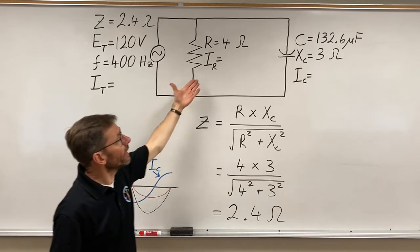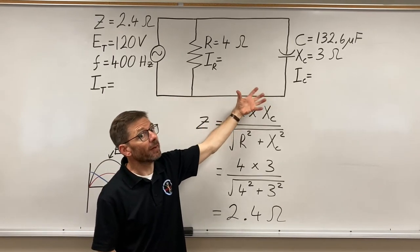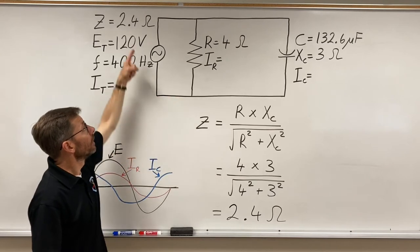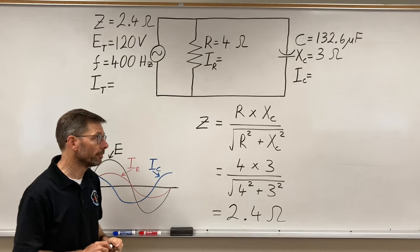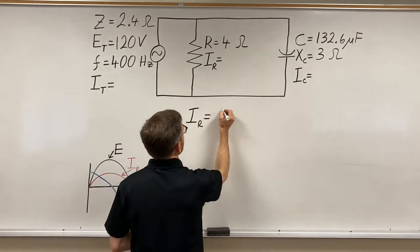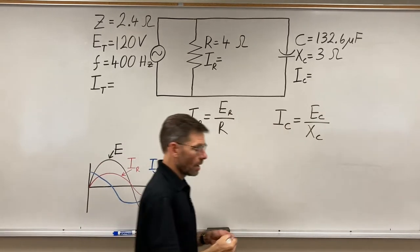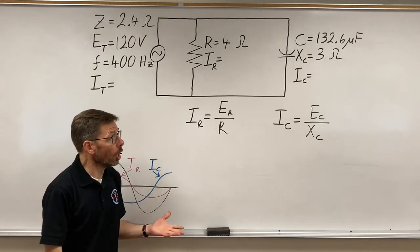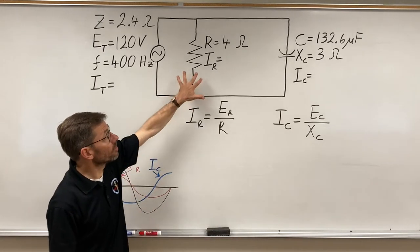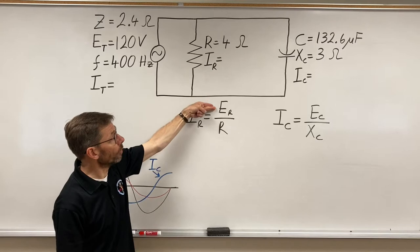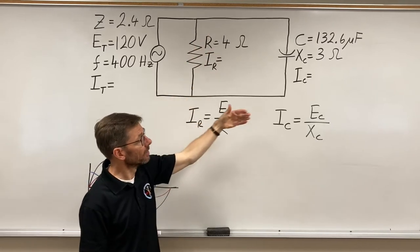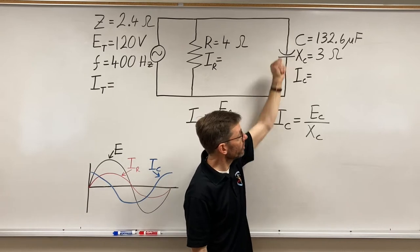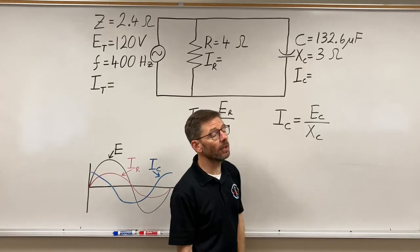So now we're going to find out our currents, vectorially add them, and then do ohms law just to double check our impedance. And the formulas we'll use are ohms law. The current on the resistor uses the voltage and the resistance, the values on the resistor. Likewise for the capacitor, the voltage here and its ohmic value.